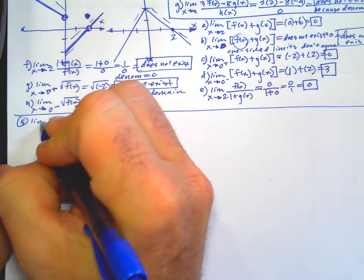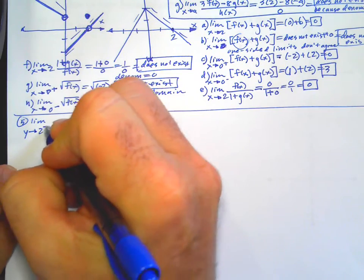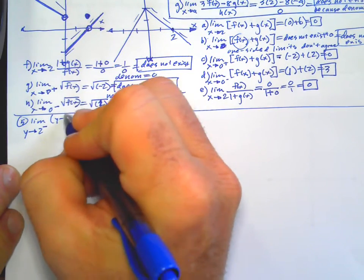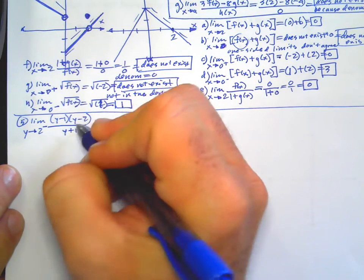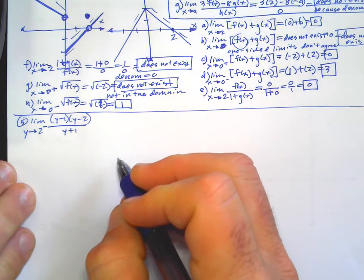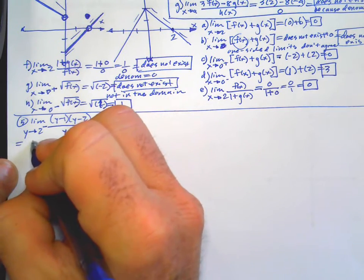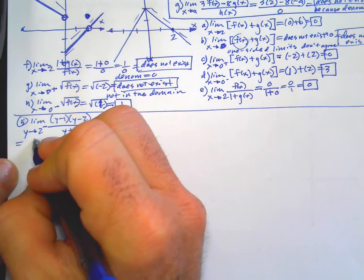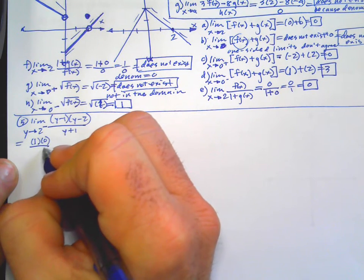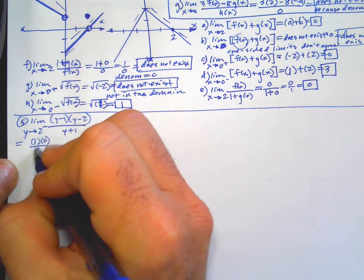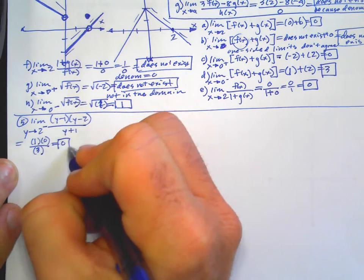Number 5 says: the limit as Y approaches 2 from the left side of (Y minus 1)(Y minus 2) over (Y plus 1). If we just plug the value in first — 2 minus 1 is 1, times 2 minus 2 is 0, over 2 plus 1 is 3. It's not negative 2, it's positive 2 — and we're going to get 0.